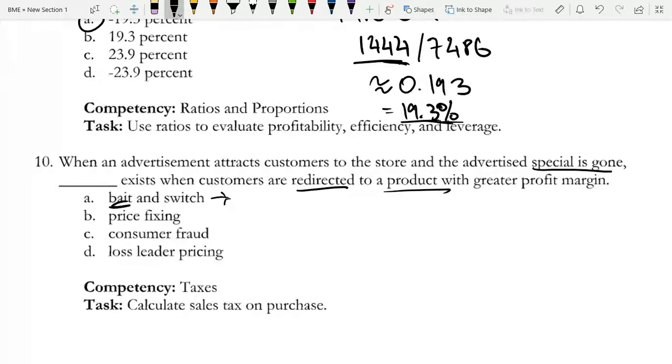Price fixing would be more like changing the price. Consumer fraud, well, that's when a customer is doing something. Loss leader pricing, well, we now have a profit with a greater margin, so we're not making a loss. So bait and switch just makes the most sense as well.